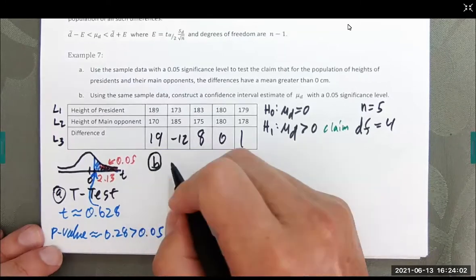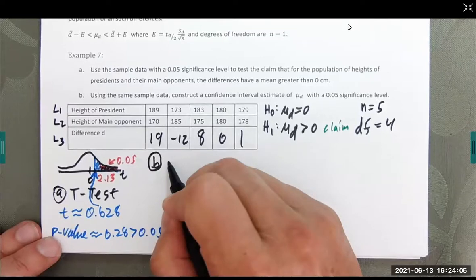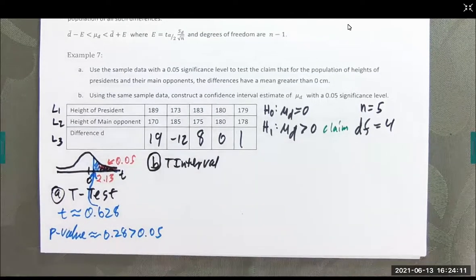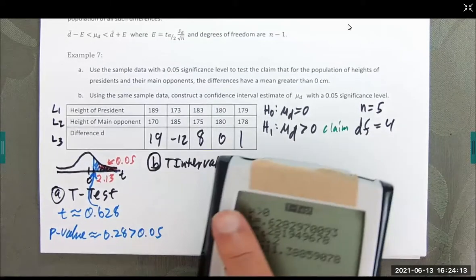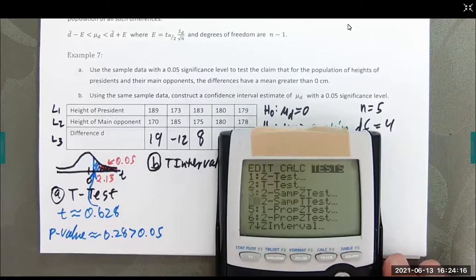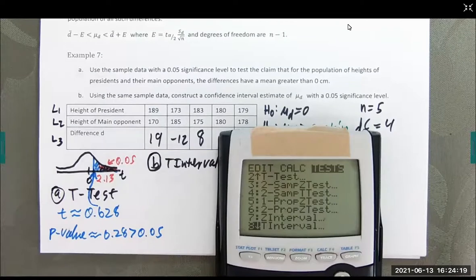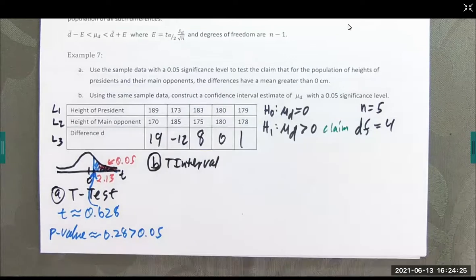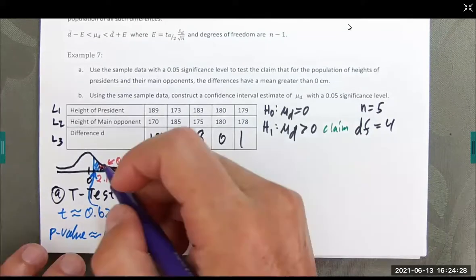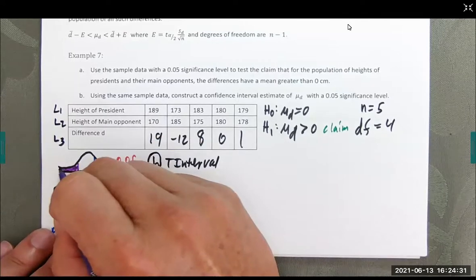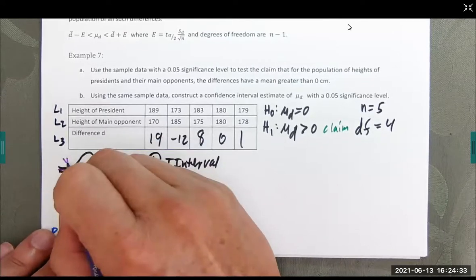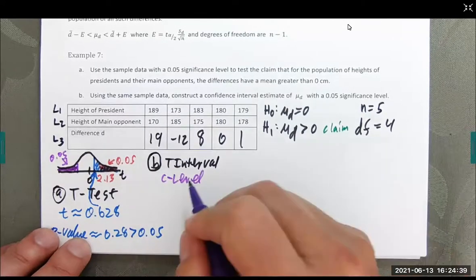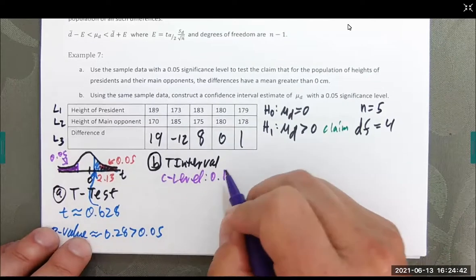I'm now going to run a regular T interval based on the data in list three. That T interval right there, number eight online. And we're running the data on list three. Now, I want to point out again, this is a one tail. So, that gets a little tricky. I had 0.05 over here. That means I need 0.05 over here. It has to be a two tail. So, this means that my C level is 0.9. So, data is still on list three. That's going to be 0.9.